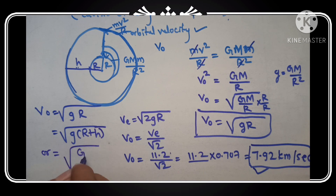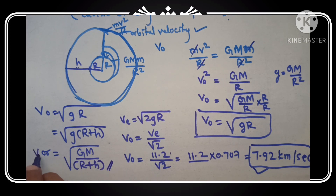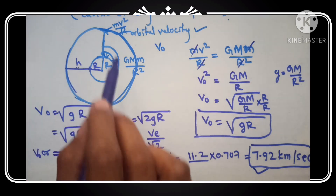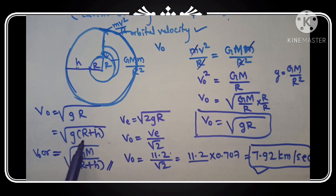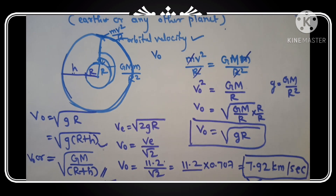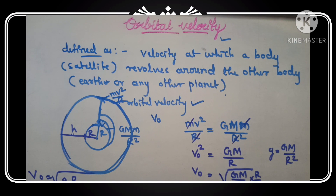The orbital velocity is 7.92 km/s, which is less than the escape velocity of 11.2 km/s. For a satellite revolving at height h, where R becomes R+h, orbital velocity is given by √(g(R+h)) or √(GM/(R+h)). These two equations are very important for solving problems. So this is about the orbital velocity, escape velocity, and Newton's law of gravitation. Do study and we will discuss the next concept in the next session — thank you, please subscribe and share.